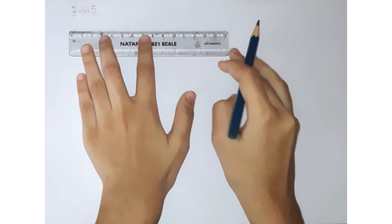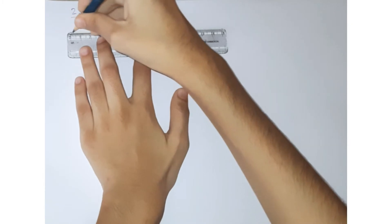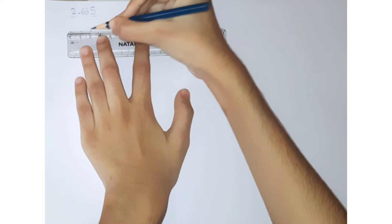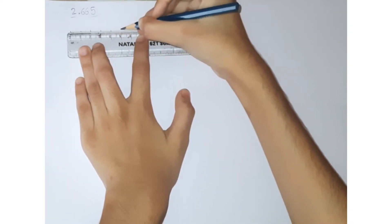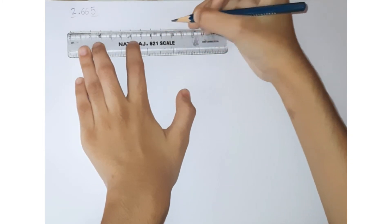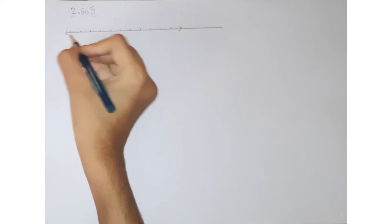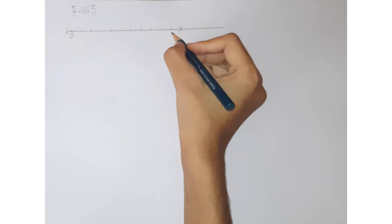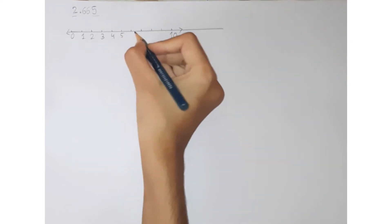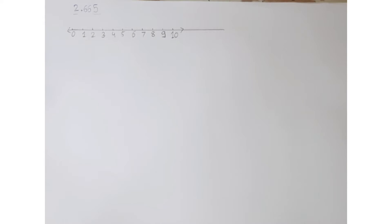First we will draw the number line. So this is a number line. 0 to 10 and here 1, 2, 3, 4, 5, 6, 7, 8, 9. We know that this number lies between 2 and 3. So we will magnify it.